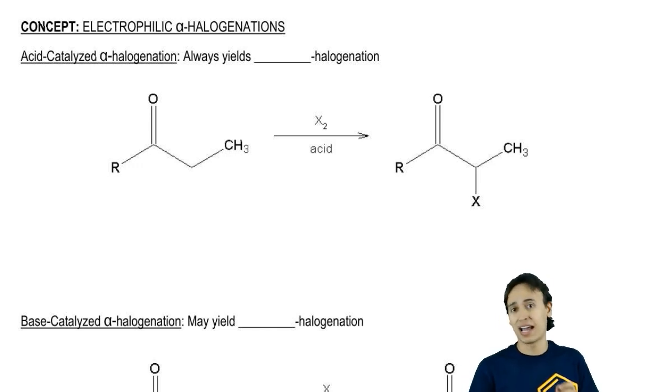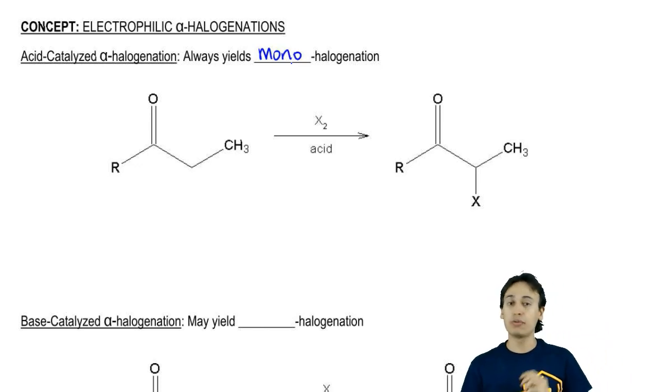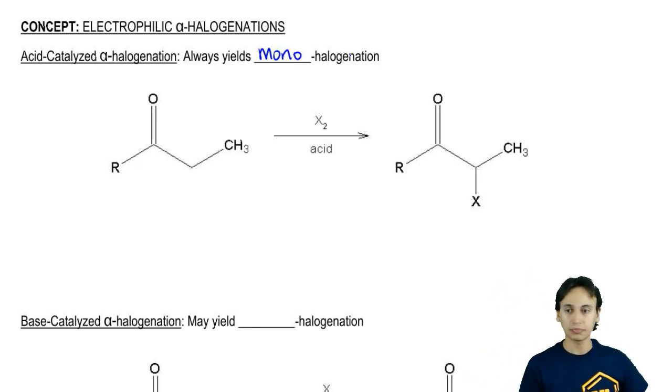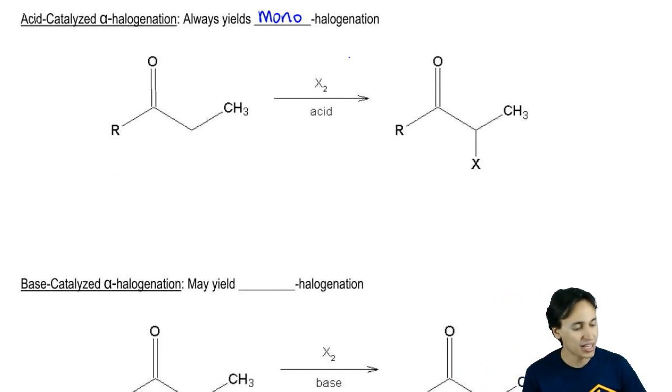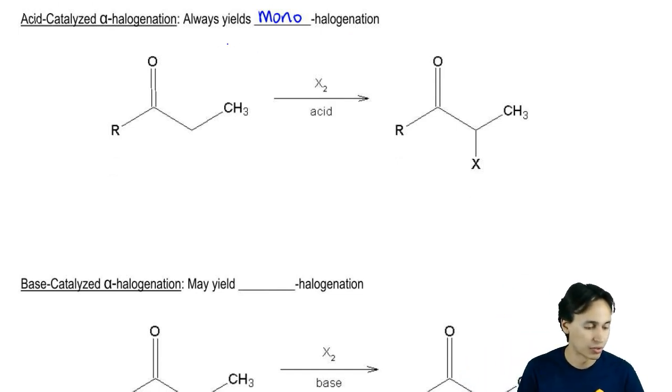The acid catalyzed mechanism is always going to yield mono halogenation. Let me show you what this mechanism looks like. For an acid catalyzed mechanism, this is going to proceed through the enol tautomer. We're going to be trying to make the enol tautomer. The way it works is let's say you're using just H3O plus and you protonate.